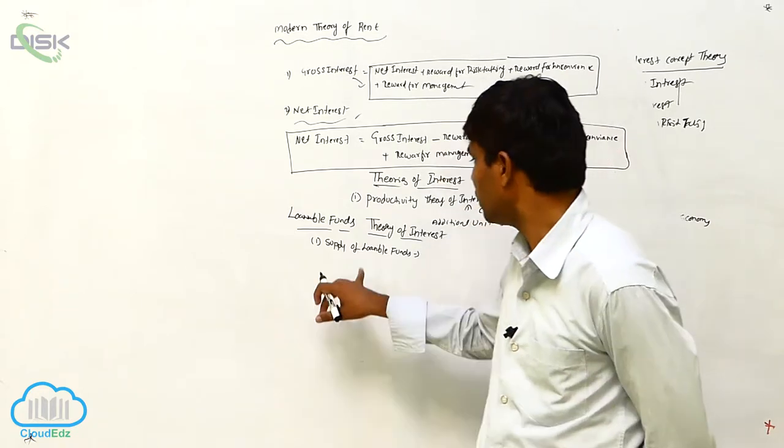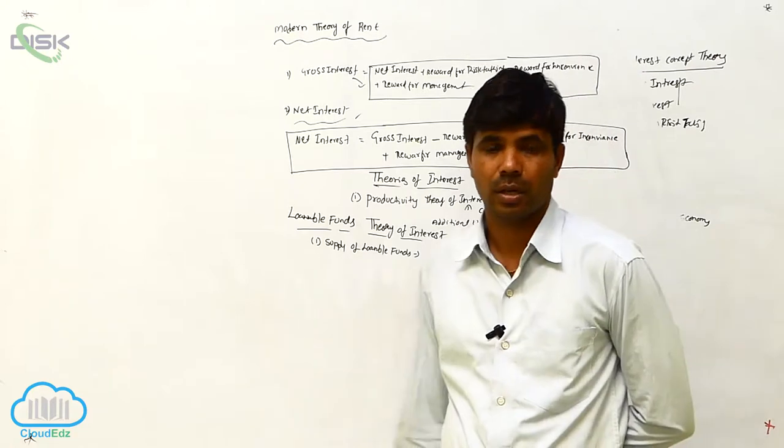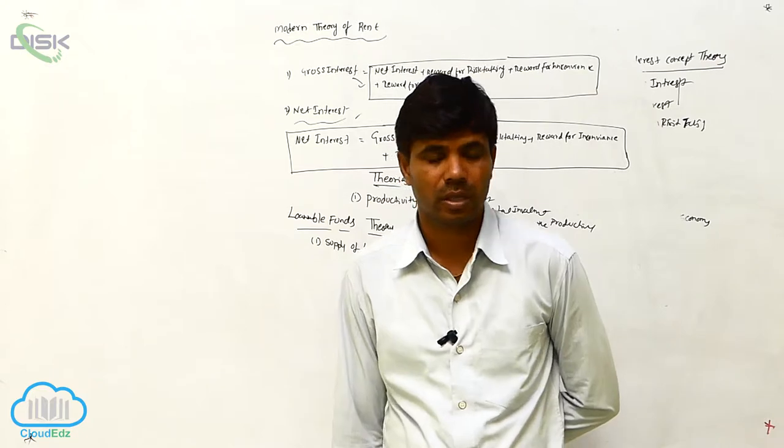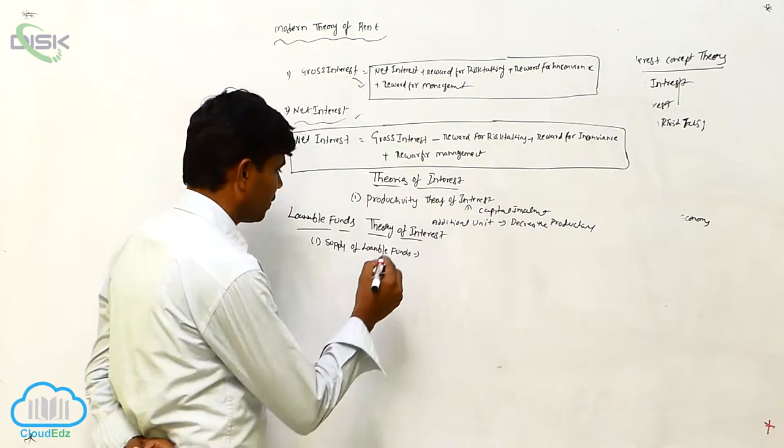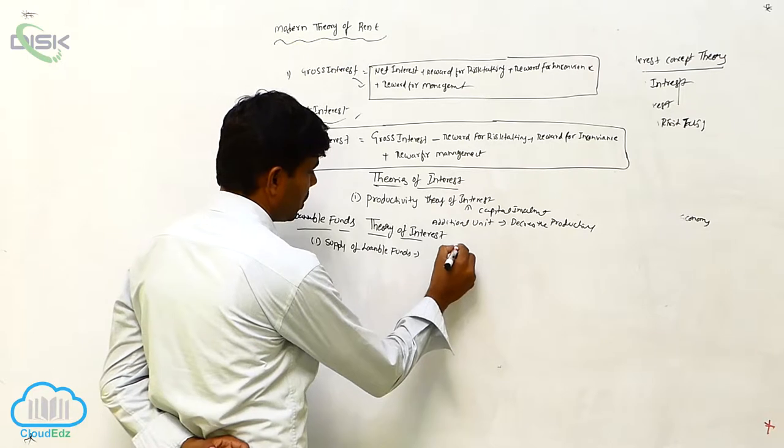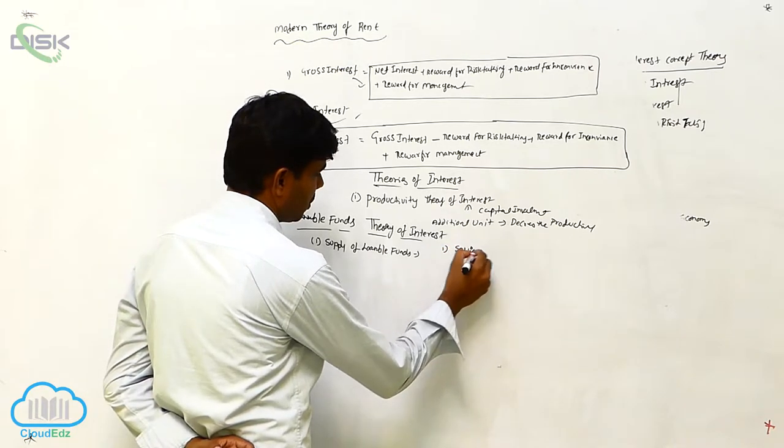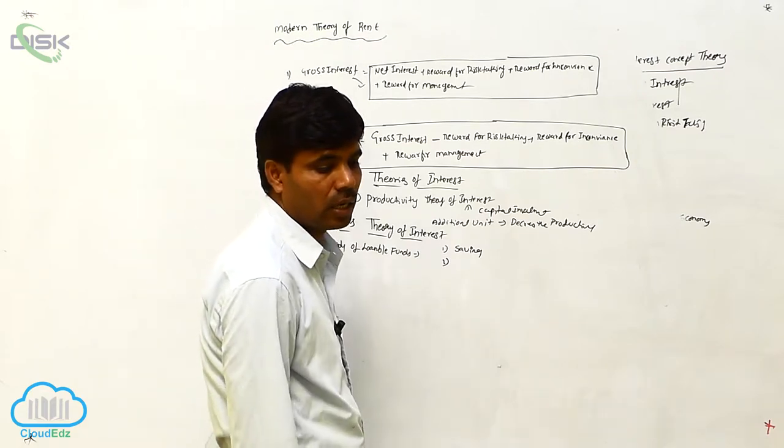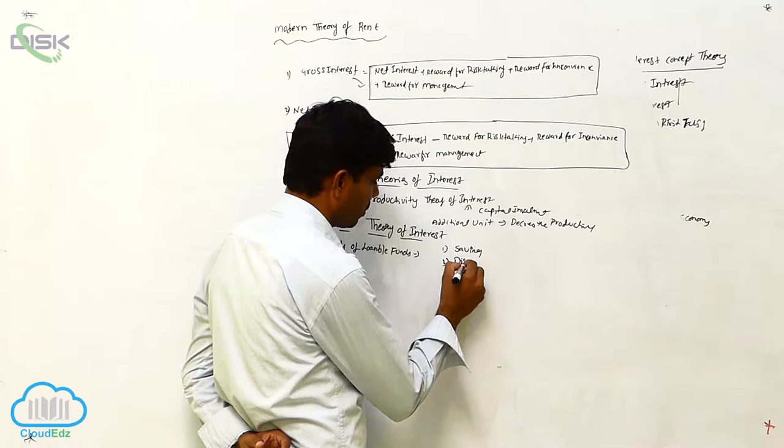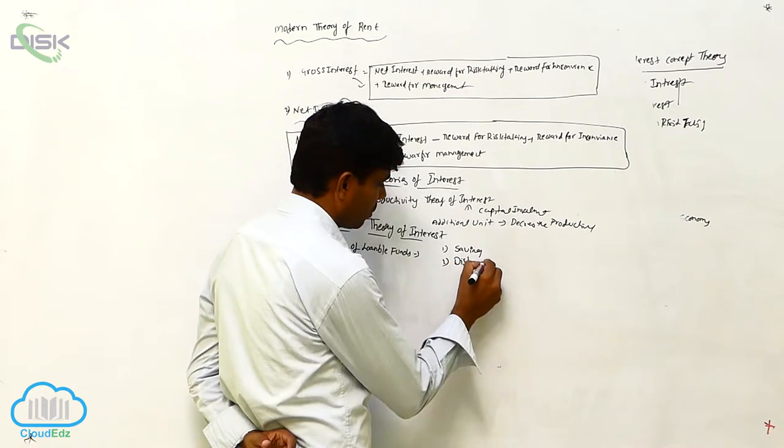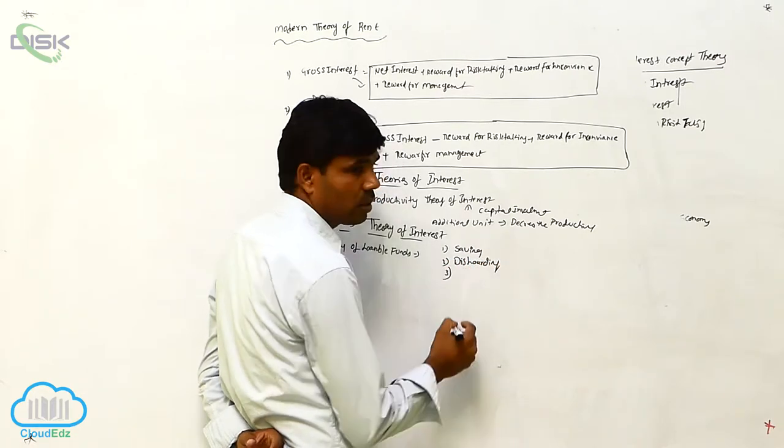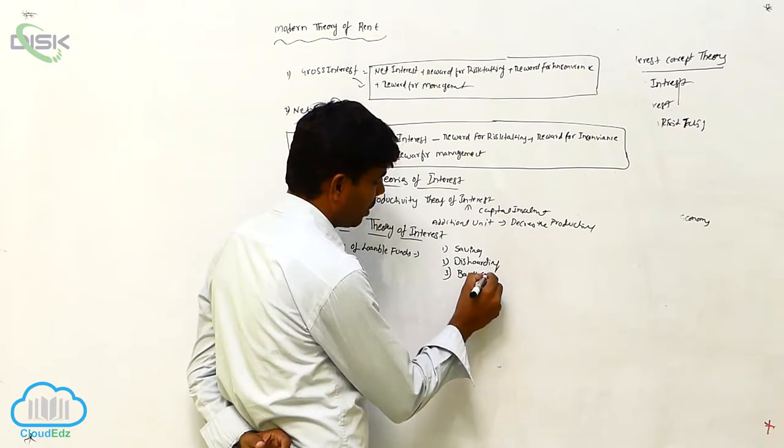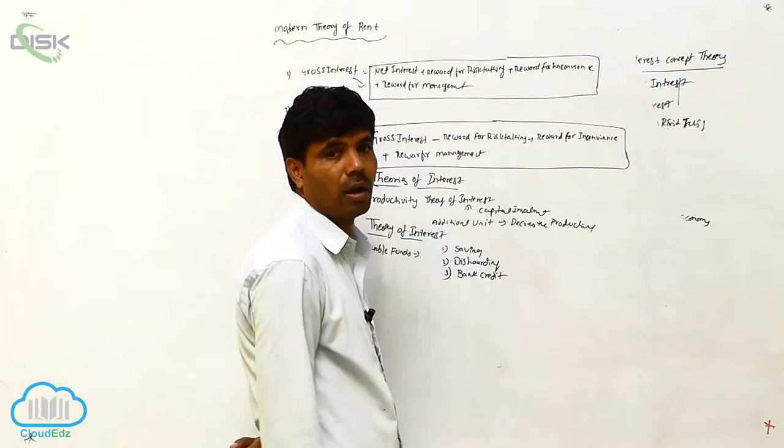Supply of loanable funds, according to that one, we are meeting three factors. First is savings. Second is dishoarding. Third is bank credits.